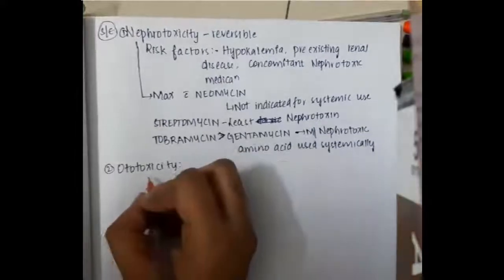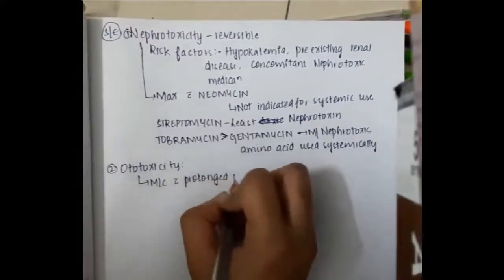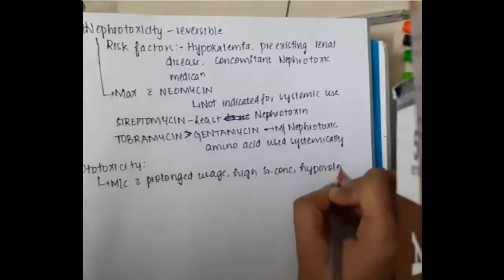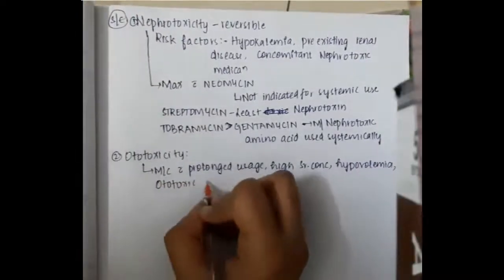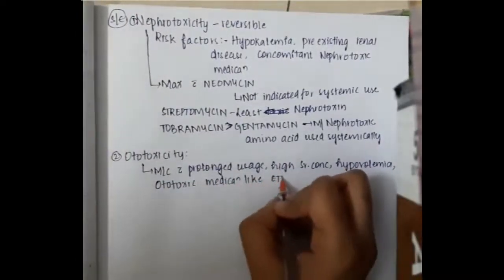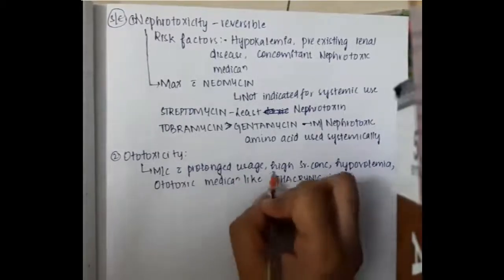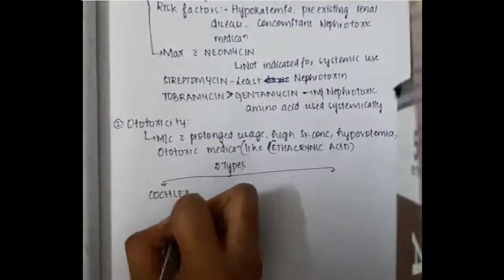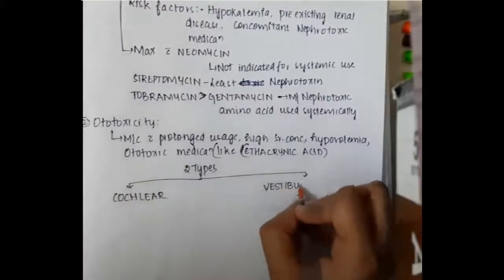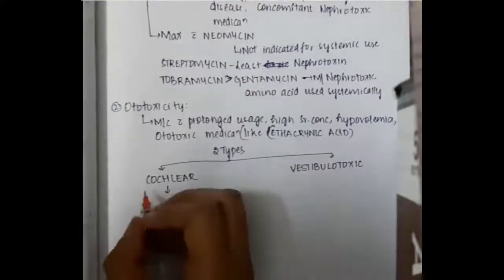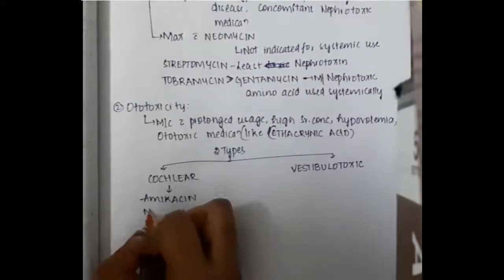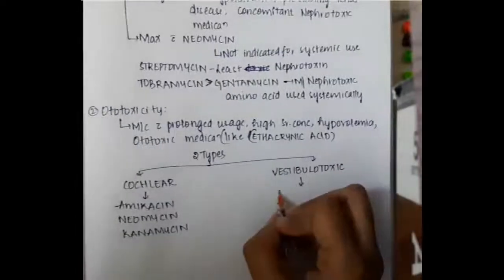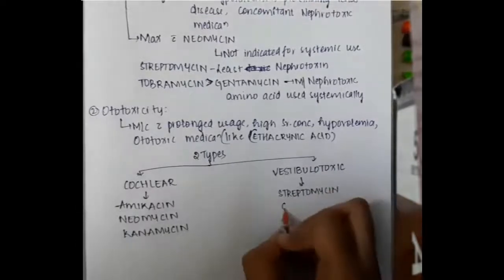Ototoxicity is most commonly seen with prolonged usage, high serum concentrations, hypovolemia, and use of ototoxic medications like ethacrynic acid. Ototoxicity is of two types: cochlear ototoxicity and vestibulotoxic ototoxicity. Maximum cochlear ototoxicity is caused by neomycin, and also by kanamycin and amikacin.